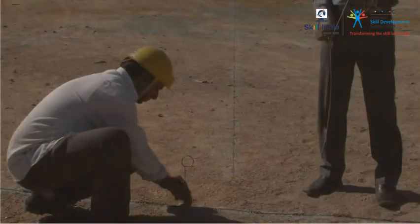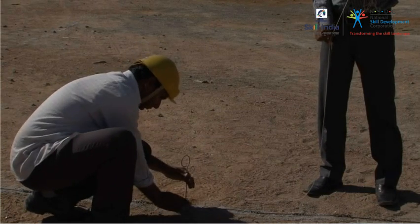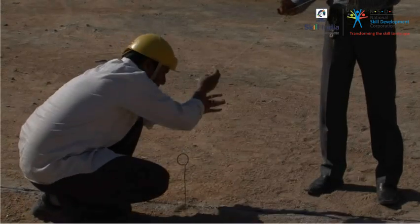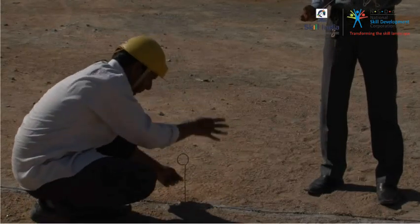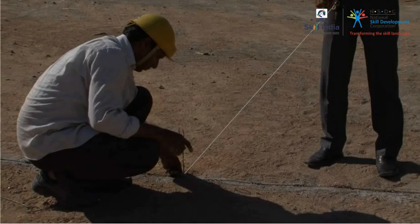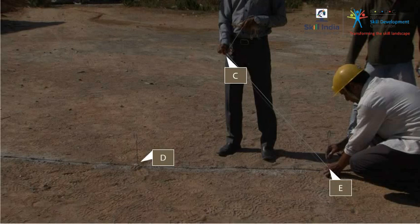Mark any point on the chain line with an arrow. Let this point be D. Take a Dorry length equal to CD. Then, holding that length of the Dorry, mark another point E on the other side of C on the chain line such that CD is equal to CE.